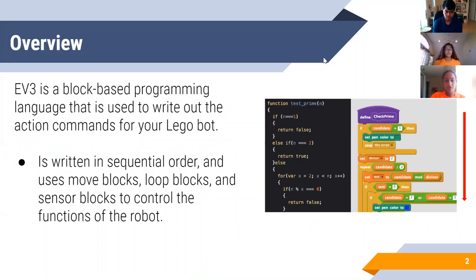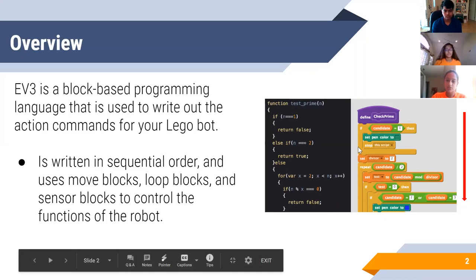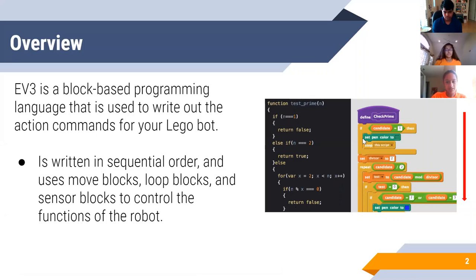You may be wondering what EV3 is. Basically it's a block-based programming language, so that means it's not all these complicated words and syntax, but it's more formatted for beginner users. It's visual and it helps you write out the commands for your LEGO robot. Also, EV3 is sequential — each action will happen one at a time and then it'll move on to the next action.